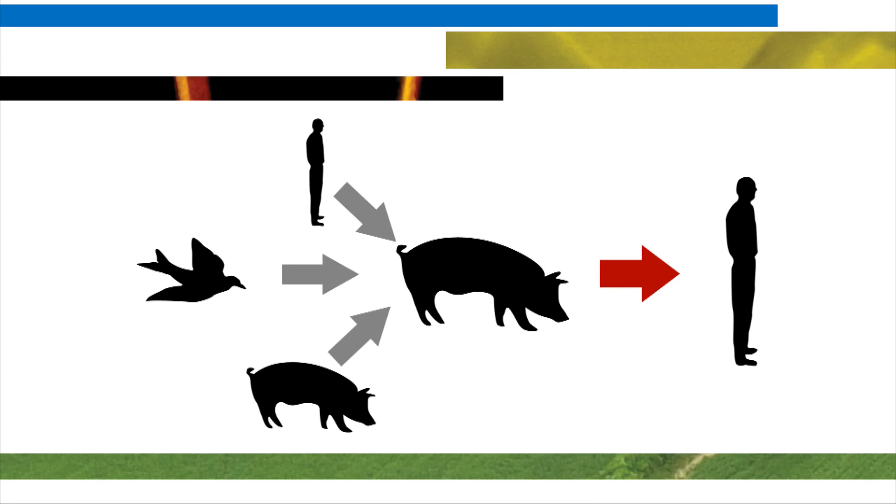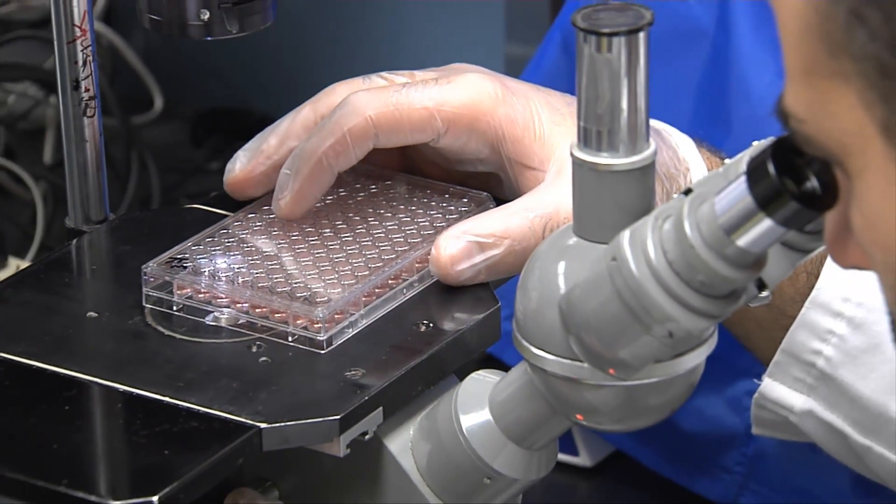Swine, on the other hand, are unique in this characteristic because they do have receptors for human, avian, and swine viruses. And it so happens that the genetic material of influenza virus is such that when two different viruses get into the same host, the genetic material can get mixed up and you end up with progeny viruses that are different from the parents.